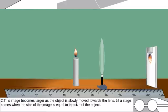2. This image becomes larger as the object is slowly moved towards the lens, till a stage comes when the size of the image is equal to the size of the object.